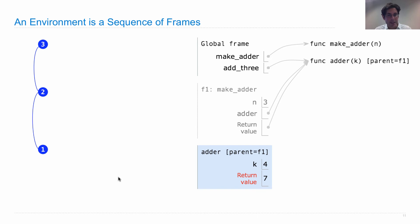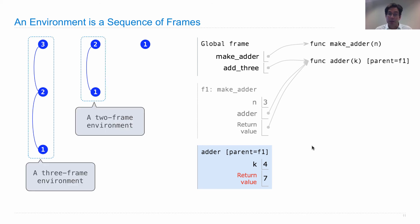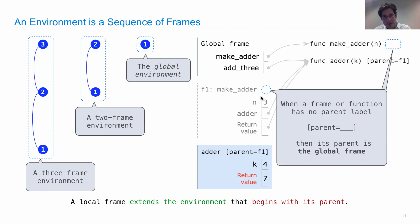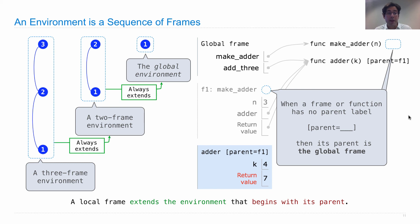The whole purpose of this is so we can look up the name n and get the right value, 3. An environment is a sequence of frames. Here's another environment — the makeAdder environment. And finally, the global environment, which consists only of the global frame. So a three-frame environment, a two-frame environment, and the global environment are all possibilities. A local frame is said to extend the environment that begins with its parent. Environments are chains starting with a particular frame and going to its parent and then its parent. When we don't say what the parent of a frame or function is, that's because it's the global frame — that's the default. A two-frame environment always extends the global environment, and a three-frame environment always extends a two-frame environment.